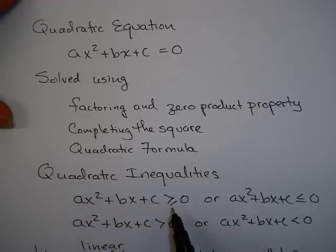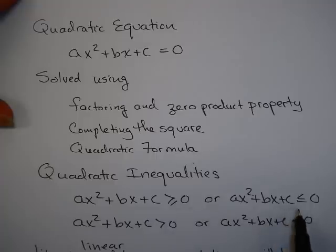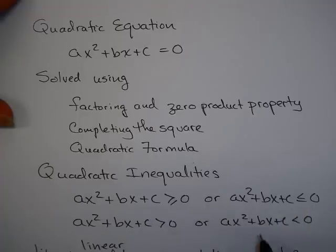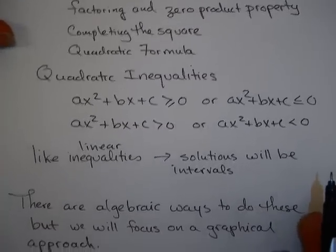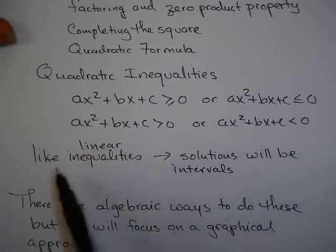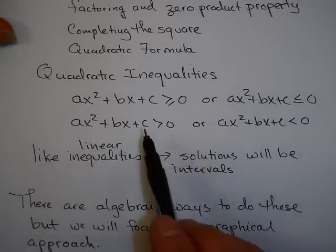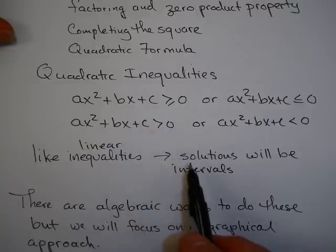Now we're going to focus on what are called quadratic inequalities. Quadratic inequalities, like quadratic equations, have the form ax² + bx + c, but instead of equal to 0, we might use greater than or equal to 0, less than or equal to 0, greater than 0, or less than 0.